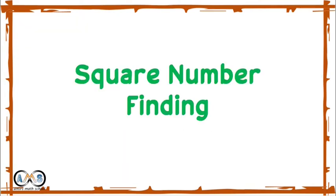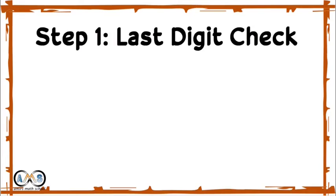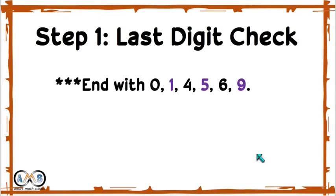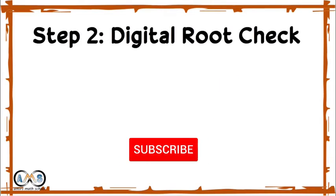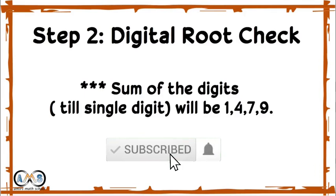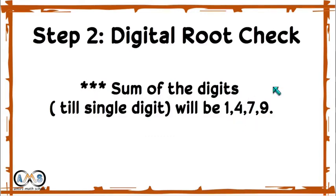Using these properties we can identify perfect square numbers. To check any number, step 1 is the last digit check — the number must end with 0, 1, 4, 5, 6, or 9, and must never end with 2, 3, 7, or 8. Step 2 is the digital root check — take the sum of the digits down to a single digit; it must be 1, 4, 7, or 9.